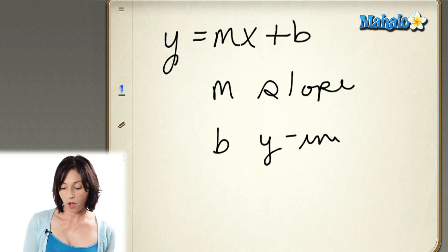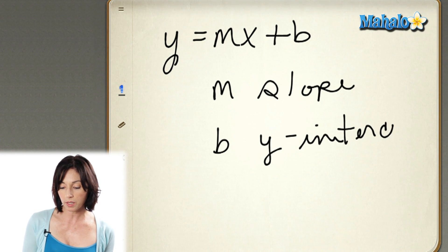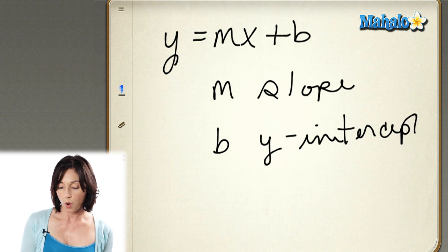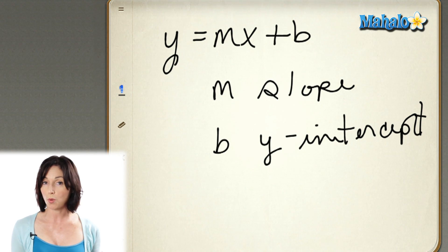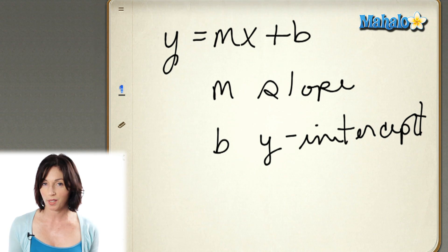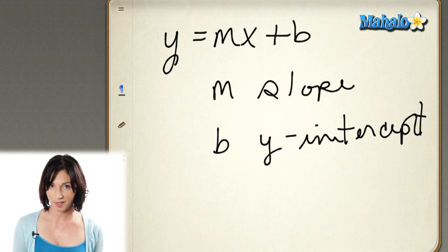All that really means is that b is the place where the line will cross or intercept the y-axis. So let's take a look.